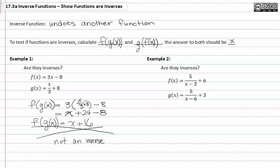However, if we look at example two, let's try f(g(x)) in example two. We know g(x) is five over x minus six plus three, so I'm going to rewrite f(g(x)) as f of five over x minus six plus three.